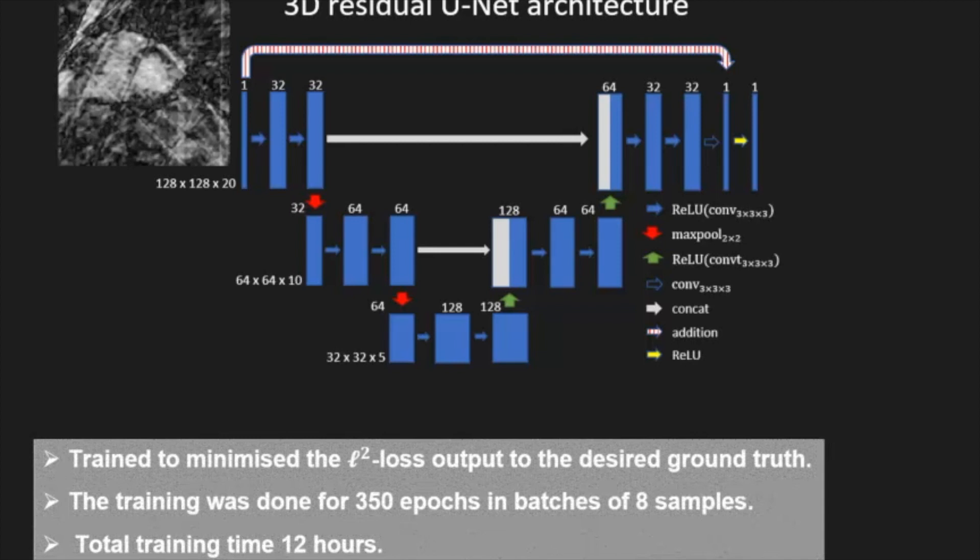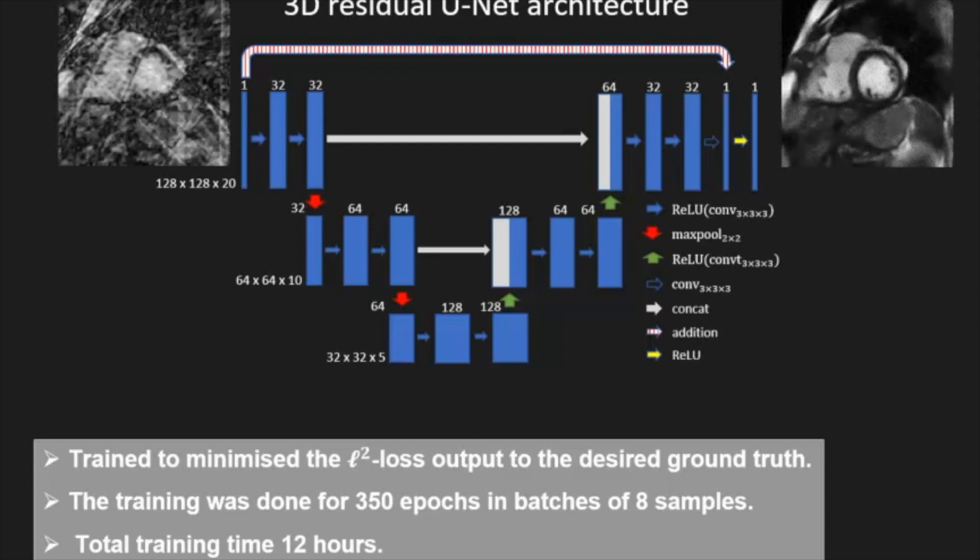To train this, we used our reconstructions from undersampled k-space data and minimized the L2 loss to our desired ground truth from fully sampled k-space data. Then the training is done for 350 epochs and batches of size 8. And the training takes only 12 hours on one single GPU. Then after the training is performed, we get nice cleaned-up reconstructions in space-time back.